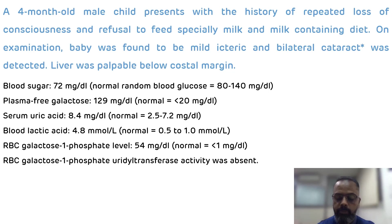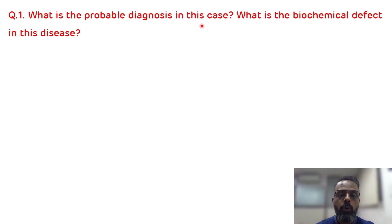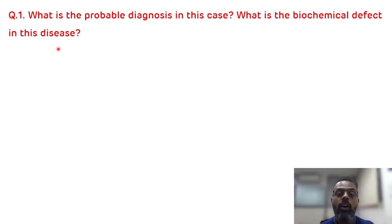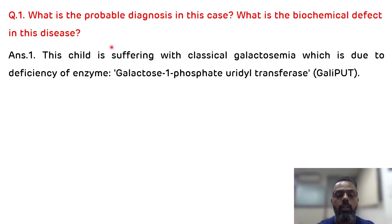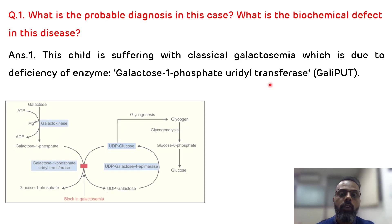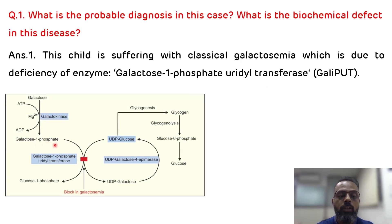Question one: what is the probable diagnosis and the biochemical defect? From the description and investigation, this is the case of classical galactosemia, which occurs due to deficiency of the galactose-1-phosphate uridyltransferase enzyme, and it is inherited as an autosomal recessive disease. This enzyme converts galactose-1-phosphate to glucose-1-phosphate, and its deficiency results in galactosemia.